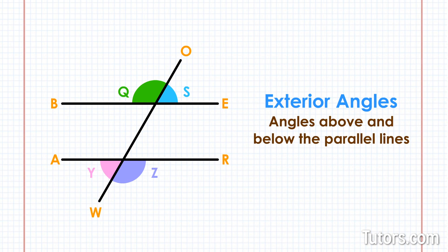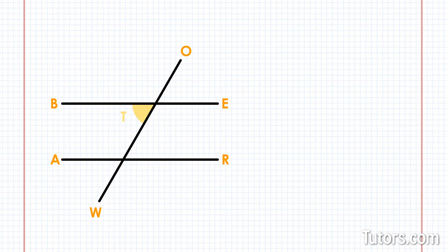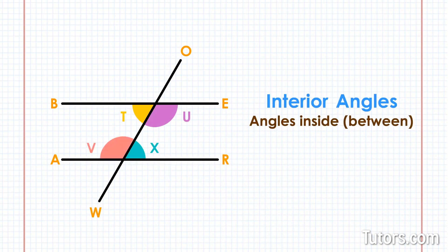Your drawing has four exterior angles: angle Q, angle S, angle Y, and angle Z. Your drawing also has four interior angles, or angles inside, between the parallel lines: angle T, angle U, angle V, and angle X.